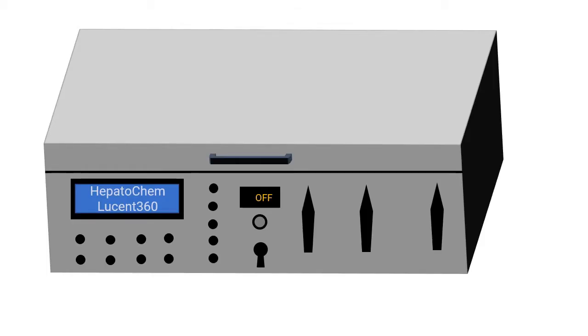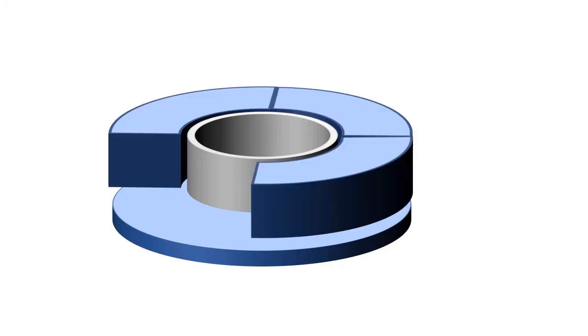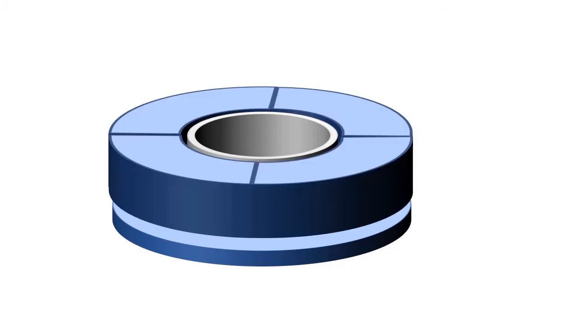Check out this illustration of the Lucent 360. You'll notice that inside the device is our thermally insulated reaction chamber. The chamber sits on top of a powerful disc-shaped LED module while the chamber's exterior walls are surrounded by an additional four LED light modules.